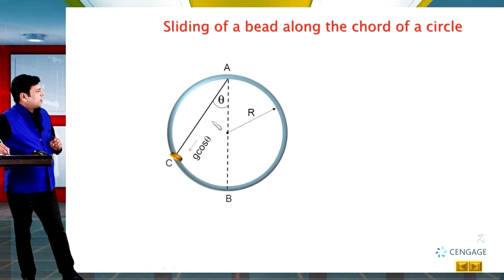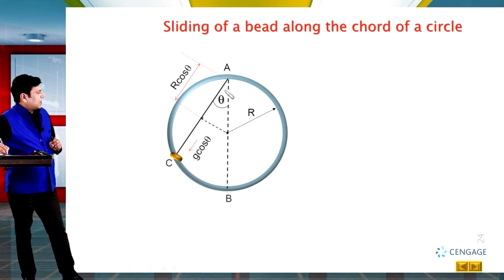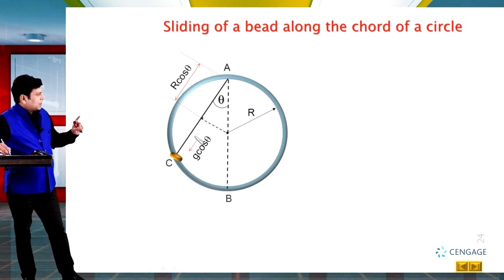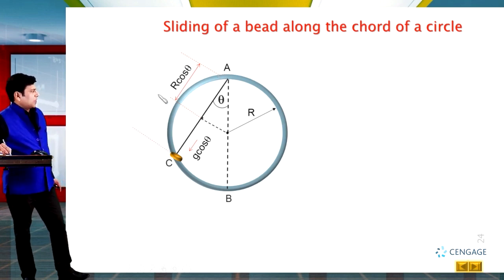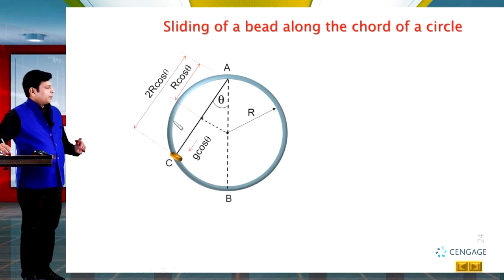Now let us find the displacement of this bead. Joining this point to the centre forms a right-angle triangle, and this length is R. That means this length should be equal to R·cosθ, and since both halves are equal, the total displacement of the bead along chord AC should be equal to 2R·cosθ.